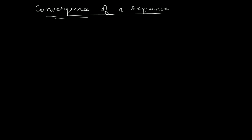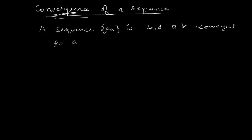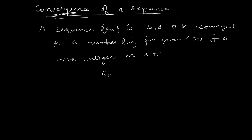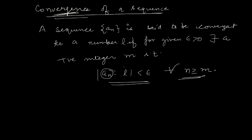Now, the next topic is the convergence of a sequence. Let's suppose a sequence An is given to us. This sequence is said to be convergent to a number L if, for a given epsilon greater than 0, there exists a positive integer M such that |An - L| < epsilon for all N ≥ M. So your sequence An is approaching L whenever this difference is very small, meaning N is very large. After leaving M-1 terms, your sequence is approaching L, and L is the limit of the sequence.